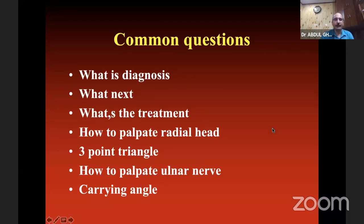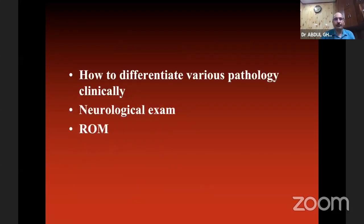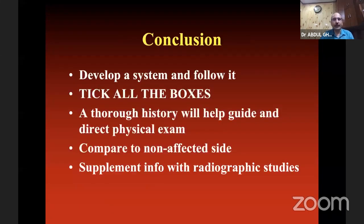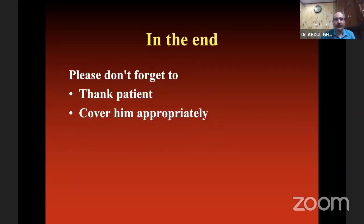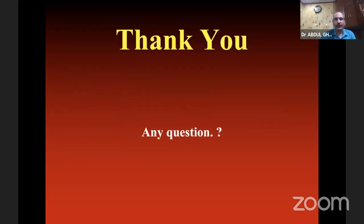Know how to palpate the radial head, draw the three-point triangle, palpate the ulnar nerve, demonstrate the carrying angle, differentiate various pathologies clinically, defend your diagnosis, perform neurological examination, and demonstrate various range of motion assessments. In conclusion: develop a systematic approach and follow it — tick all the boxes every time. A thorough history will guide you in direct physical examination. Always compare with the non-affected side. Supplement your examination with radiograph study. At the end, please don't forget to thank the patient and cover them appropriately.